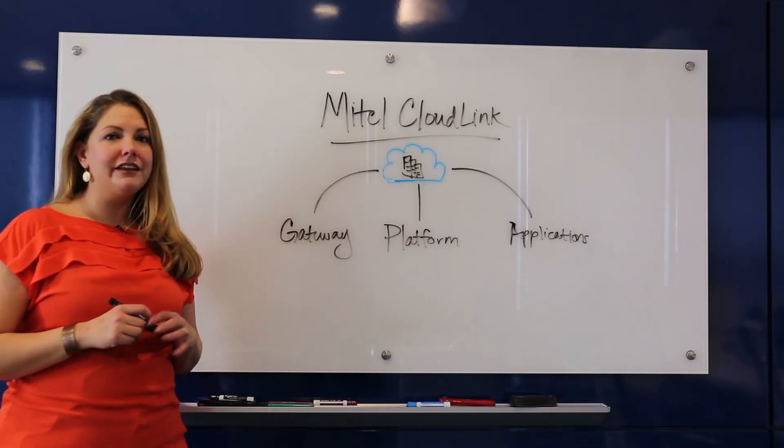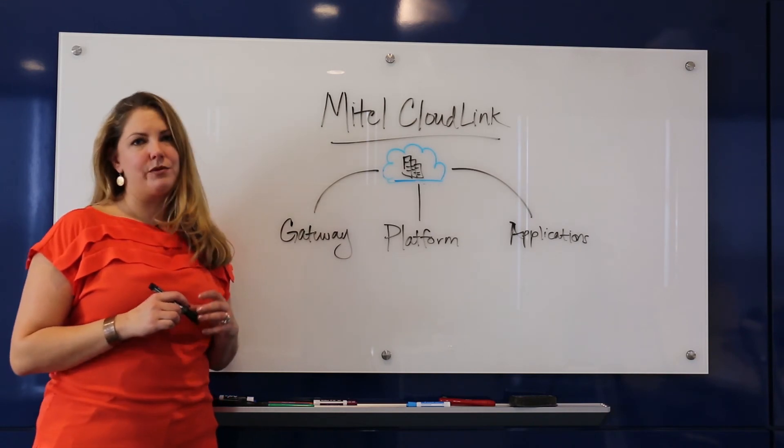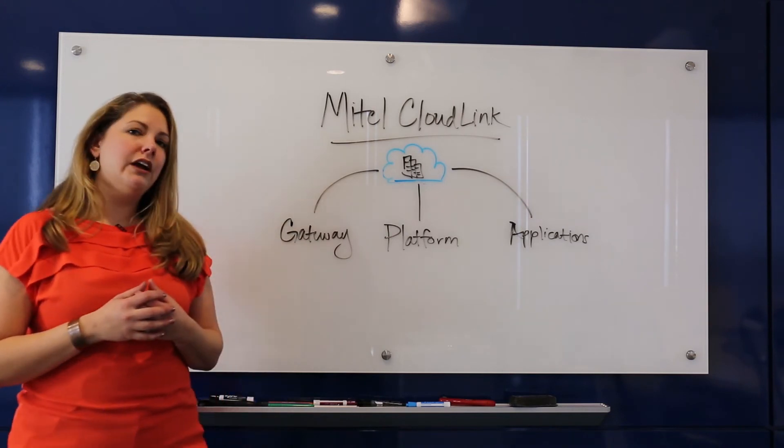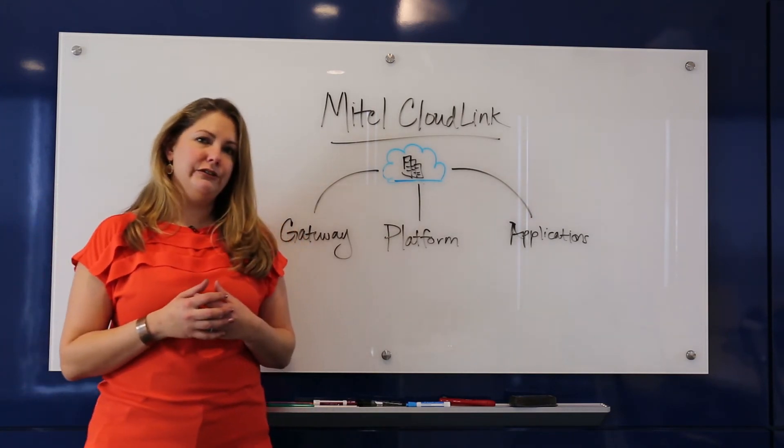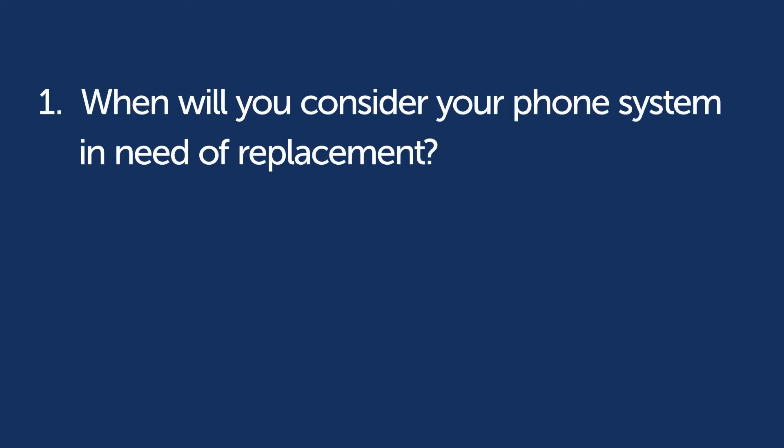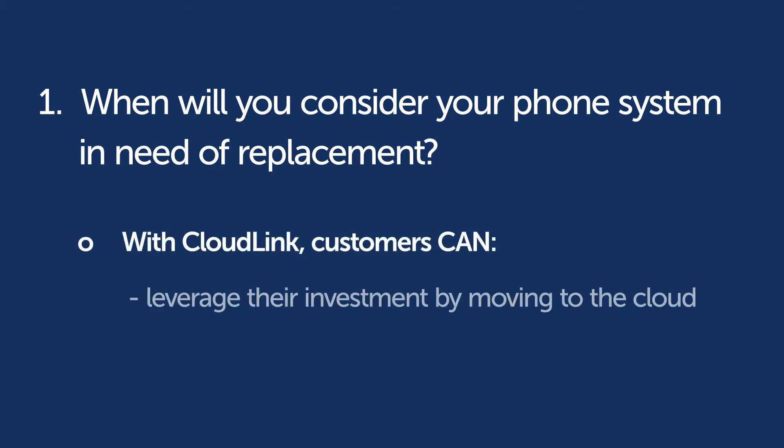There are many customers that would benefit from this blended communications platform, and there are some initial qualifying questions you can ask to identify these customers. The first question would be: when will you consider your smartphone system in need of replacement? If a customer's on-site platform has recently been deployed or is several years away from its end of life, they're most likely not looking to rip it out. CloudLink lets them leverage that investment while also taking them to the cloud in a very simple, low-cost deployment.